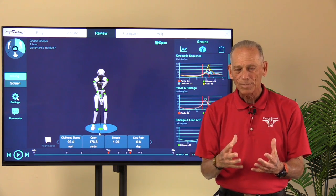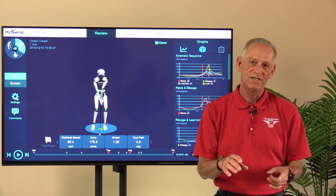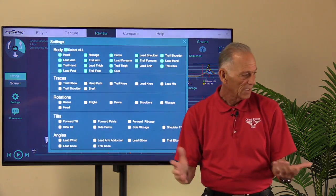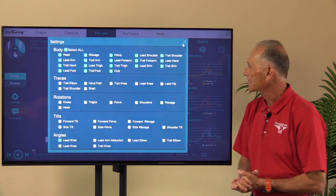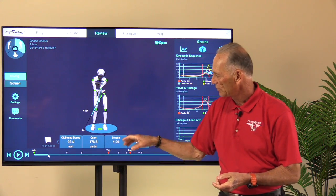So we're going to talk about a couple of things that you can see on 3D that you can't see on 2D, and one of them is your lead wrist angles. So we'll bring that up, Callie,